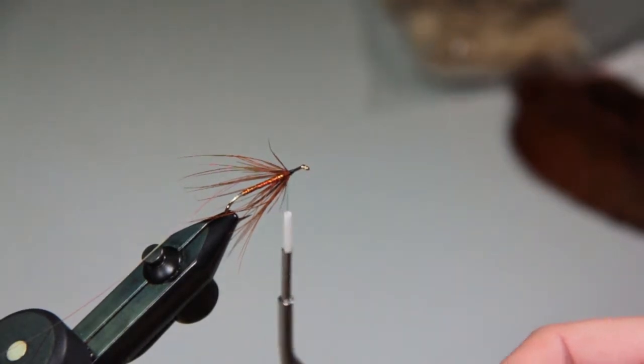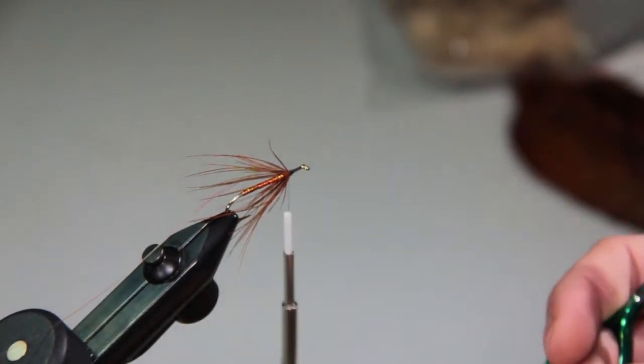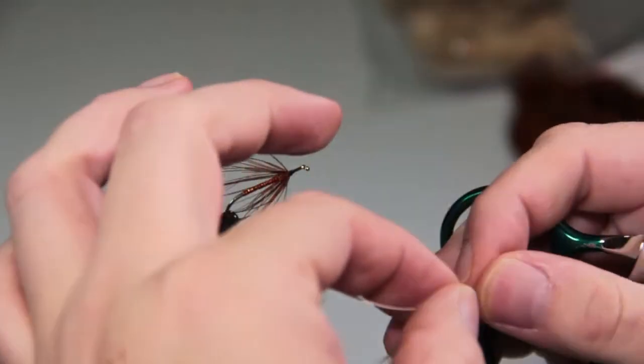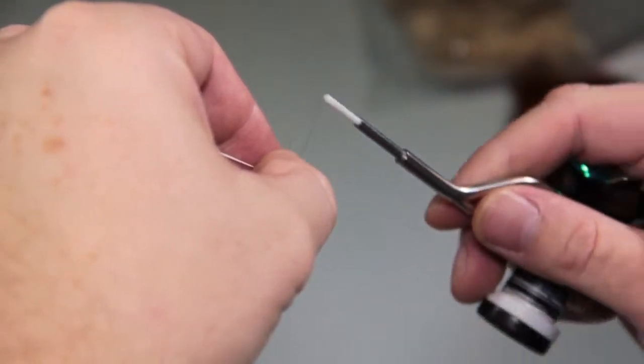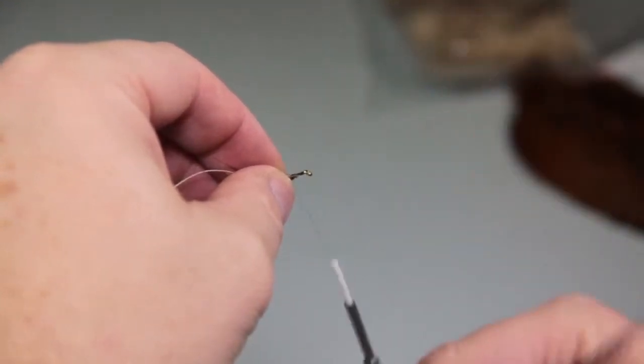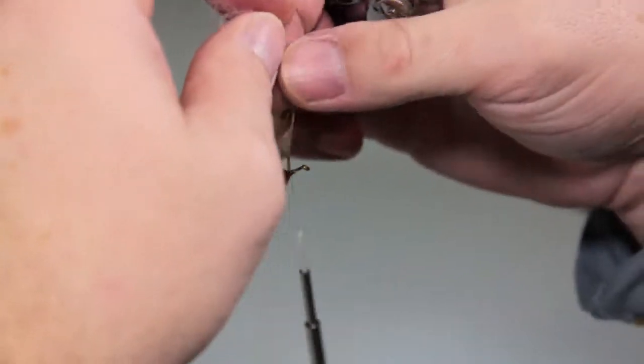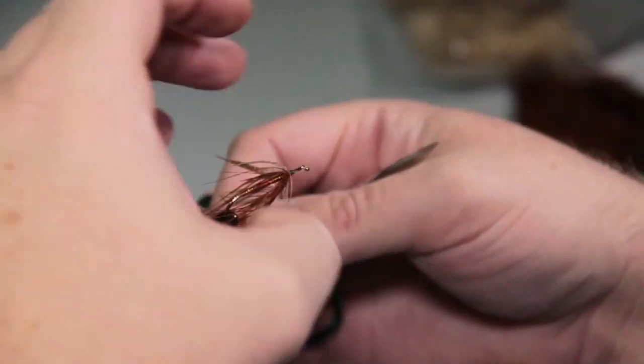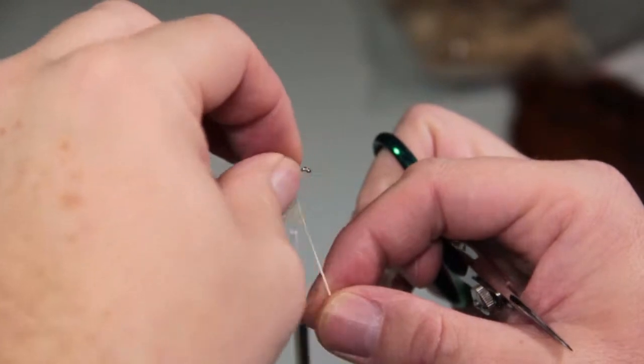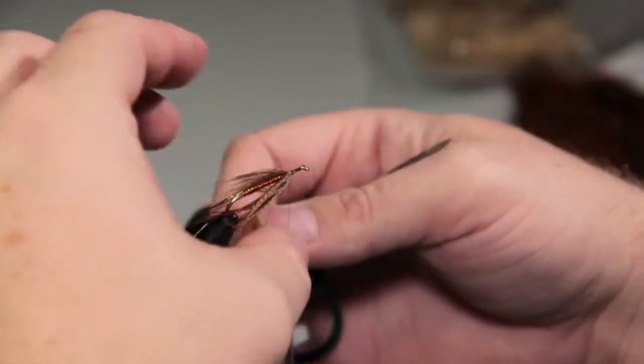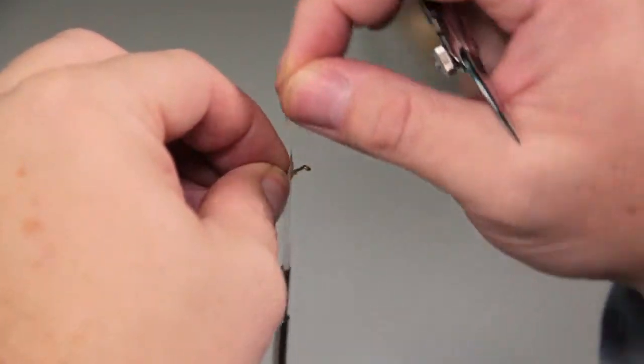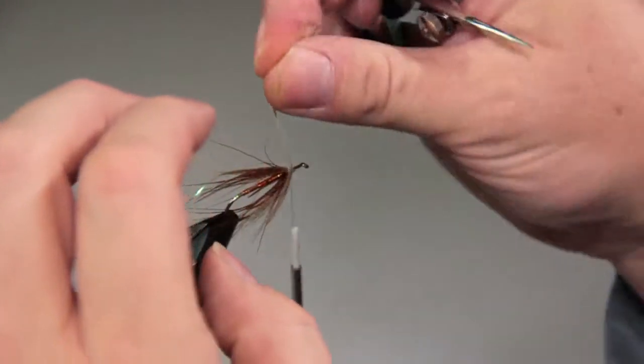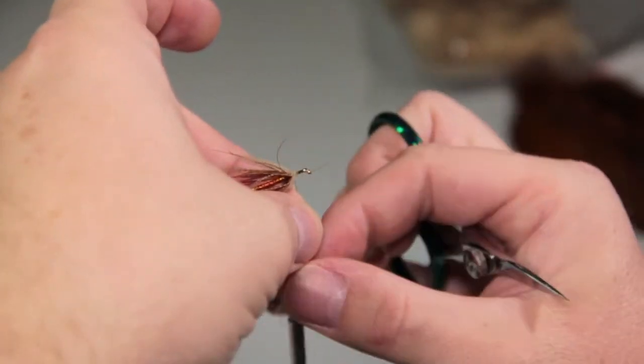Our next hackle is going to be that tan wood duck, and I've stripped one side of it a little bit less hackle here. I don't think it's so important to, especially if you're stripping one side of the wood duck, it tends to lay back wet fly style really nicely and easily without having to do the folding. Two to three turns, might just go one extra, that was a pretty sparse feather.